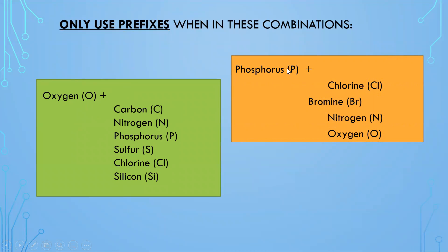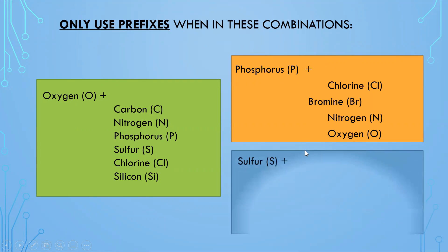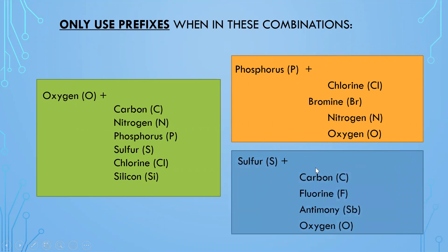If you see phosphorus with chlorine, bromine, nitrogen, or oxygen, you must use a prefix — phosphorus plus one of these four, regardless of order. If you see sulfur with carbon, fluorine, antimony, or oxygen, you must also use a prefix. But that's it.